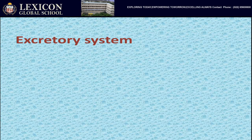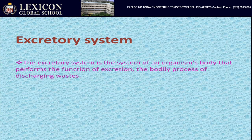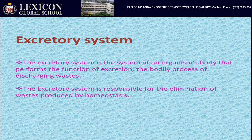What is the excretory system? The excretory system is the system of an organism's body that performs the function of excretion — the bodily process of discharging waste. The excretory system is responsible for the elimination of waste produced by homeostasis.